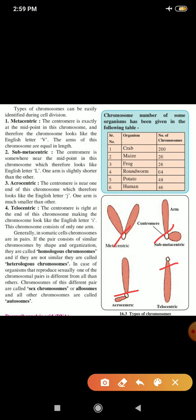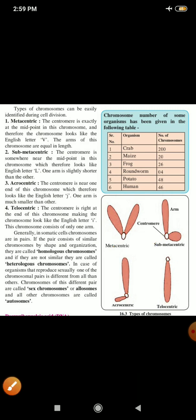Last one is telocentric. The centromere here is at the end of the chromosome, making the chromosome look like the English letter I. This chromosome consists of only one arm.